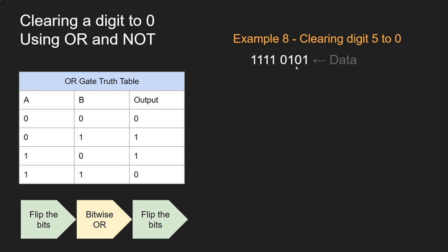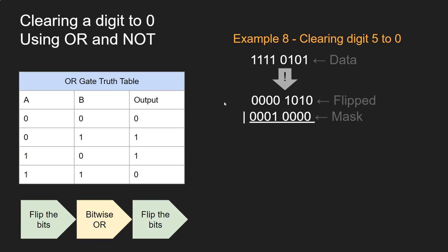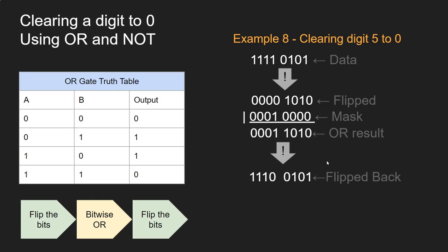Let's walk through an example. Say we have data 10000100 and we want to clear digit 5 to 0. First, we invert all the digits using NOT. Then we apply our mask and perform the OR operation. Finally, we flip everything back using NOT. The result shows all bits are the same as the original, except digit 5 has been cleared to 0. That's a brief introduction to bitwise operations, and it should be enough to get started.